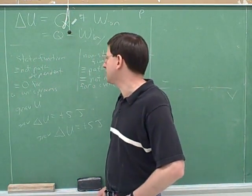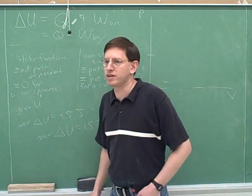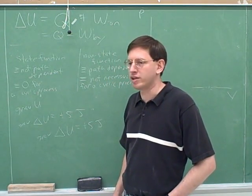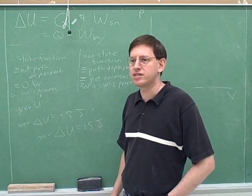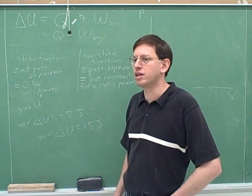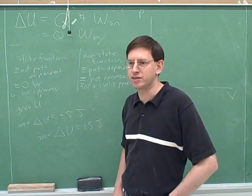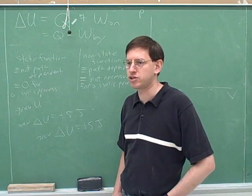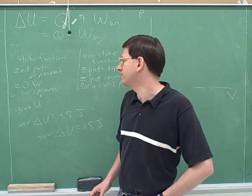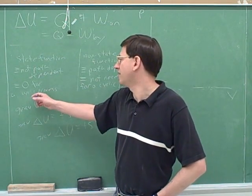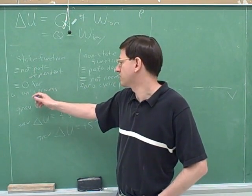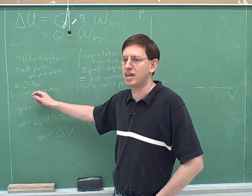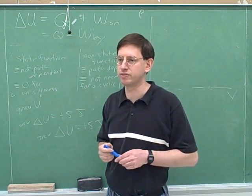You can also see that a state function is zero for a cyclic process. A cyclic process is one that ends up where it started — the initial and final points are the same. This is a term you're expected to know now in this part of the course, so you should make a note: cyclic means that the initial point is the same as the final point.